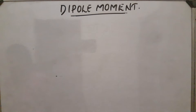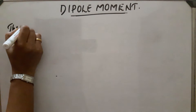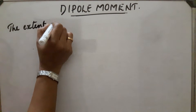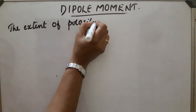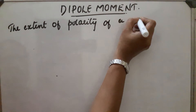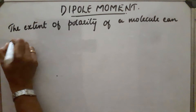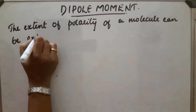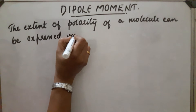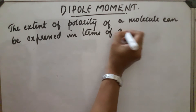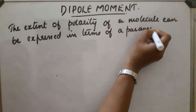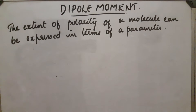Dipole moment. The extent of polarity of a molecule can be expressed in terms of a parameter known as dipole moment. Dipole moment can be defined as the product of the magnitude of the charge and the distance between the charges.